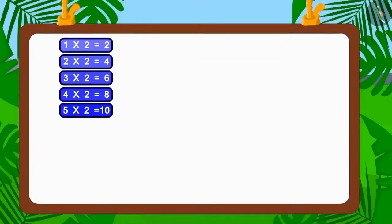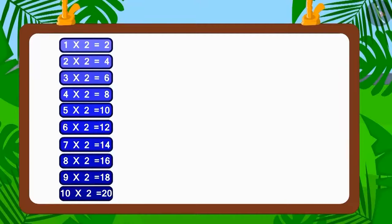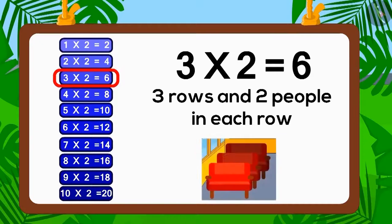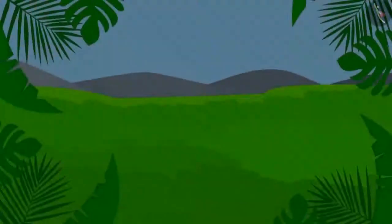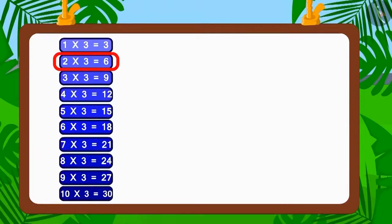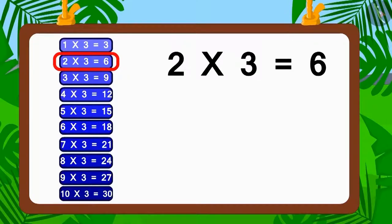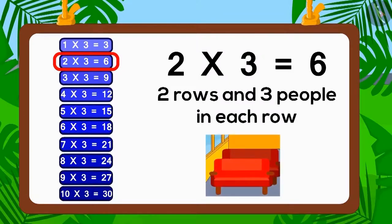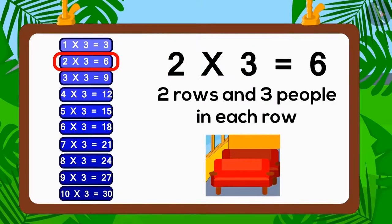Let's find all factors of six. Does six appear in the table of one? Yes — six multiplied by one is six, so one is a factor. In the table of two? Yes — three multiplied by two is six, so two is a factor. If two people sit in each of three rows, six people would sit. In the table of three? Yes — two multiplied by three is six, so three is a factor.